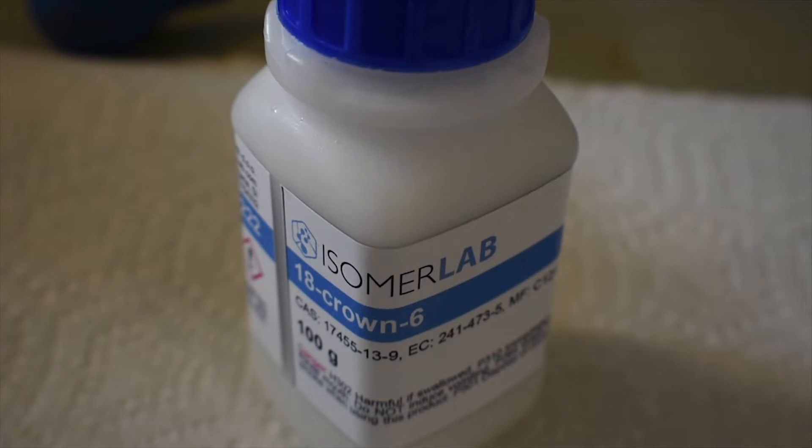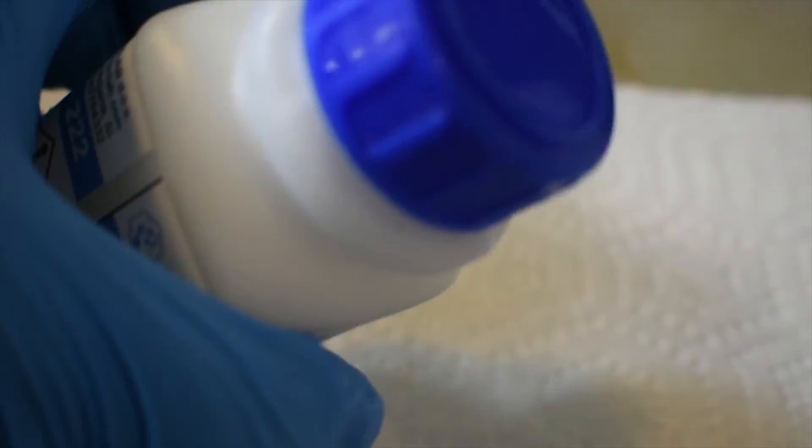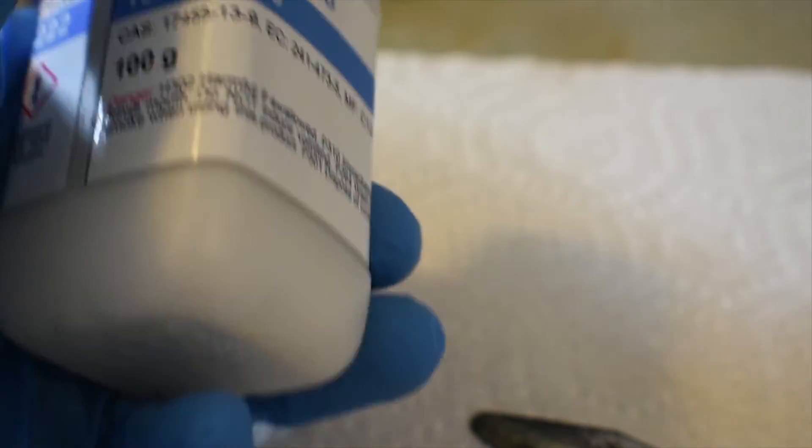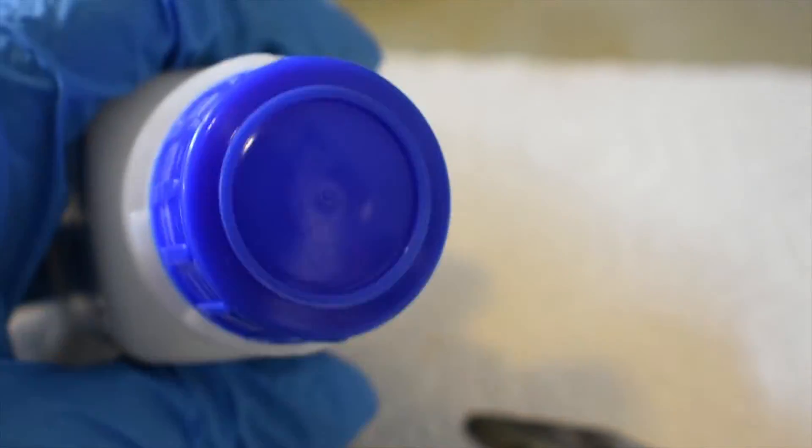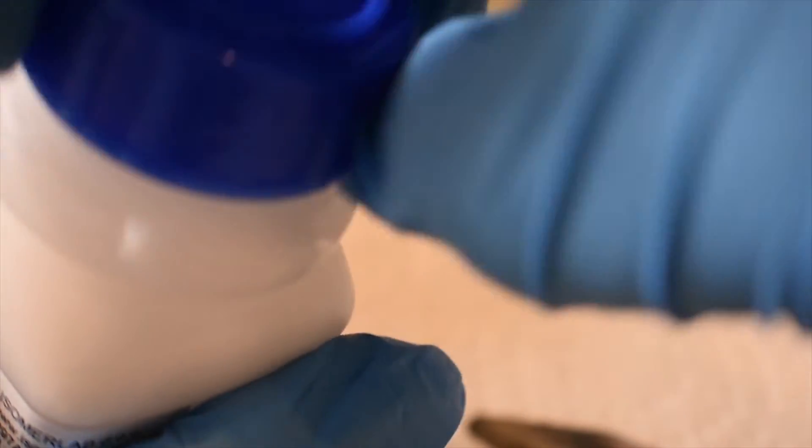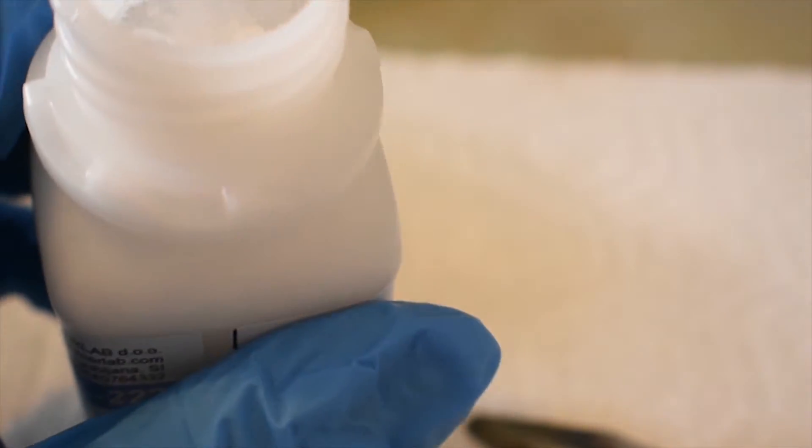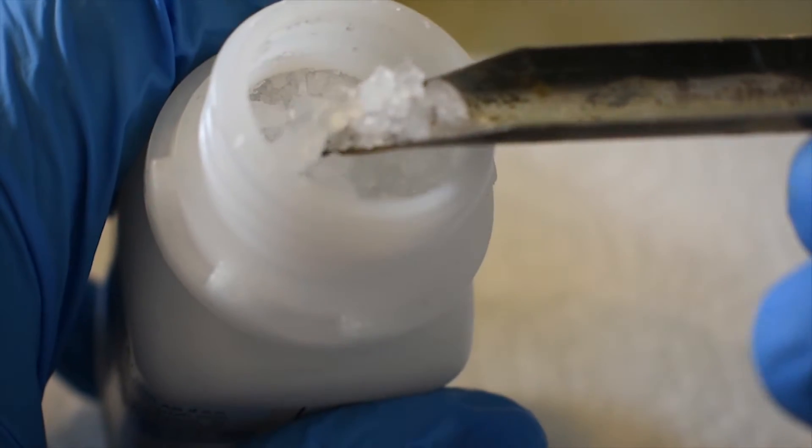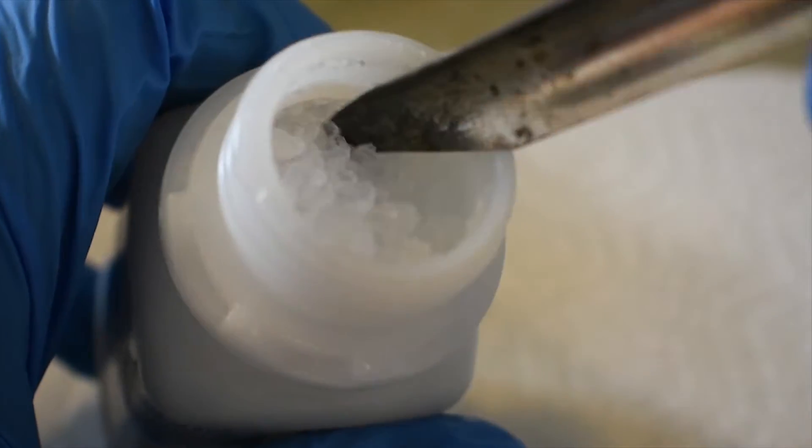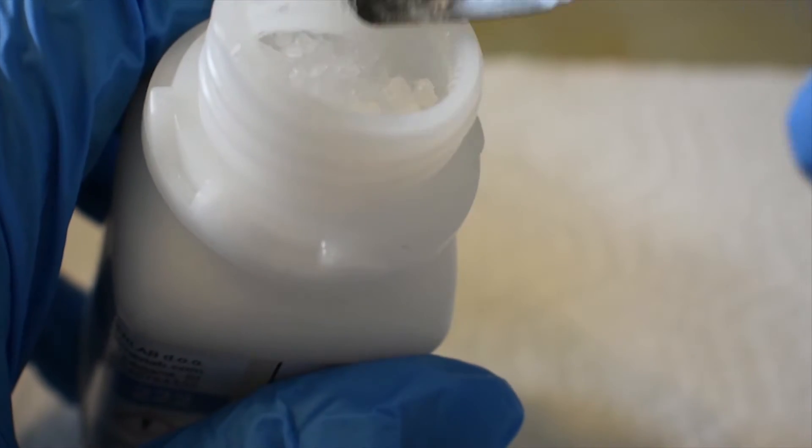To the chloroform we're going to add this. This is our 18-crown-6, our crown ether. Now for about 100 grams, this cost me about $66, which is a pretty good deal in my opinion. So 18-crown-6 is a colorless, crystalline solid that is very hygroscopic and will absorb water from the air. It's pretty nice-looking, actually.